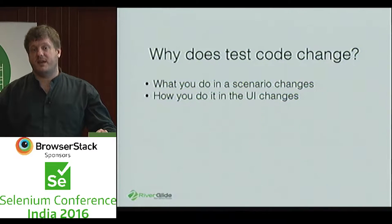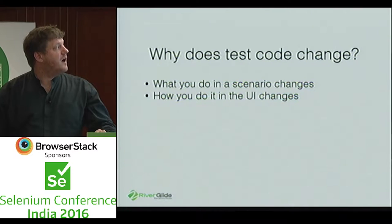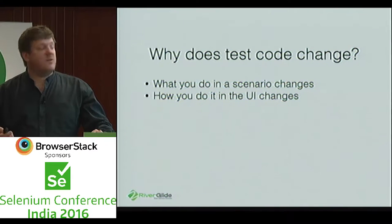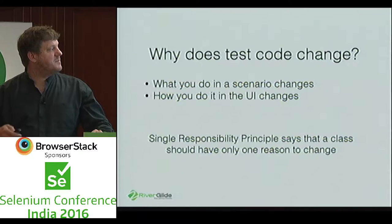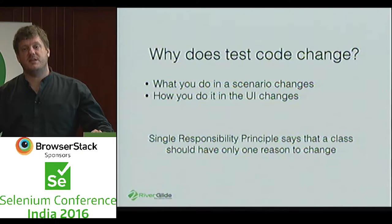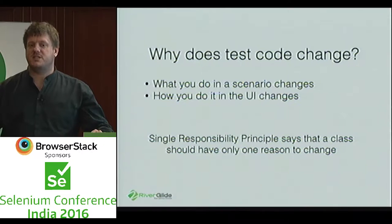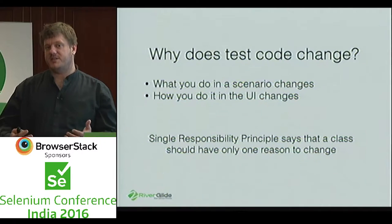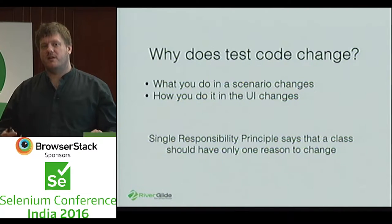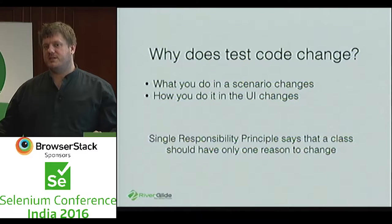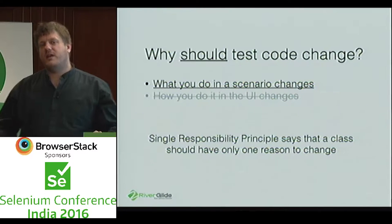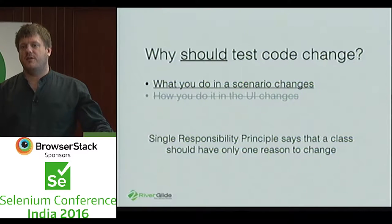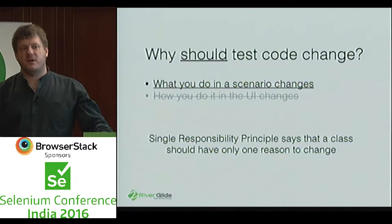Sometimes the first thing I know about that is in a consumer integration firm. The question should be: why should the code change? Single responsibility says a class should only have one reason to change. At the moment we've got two reasons: one is that the behavior has changed, and another is that the application's UI has changed. We really only want to come and change our test code when the tasks we are performing are changing. If the UI is changing, we really want to be isolated from that.